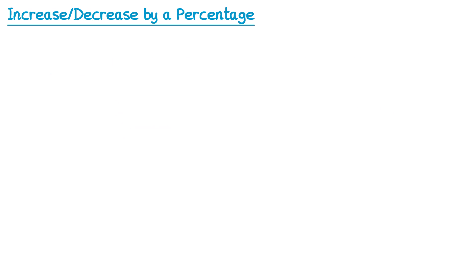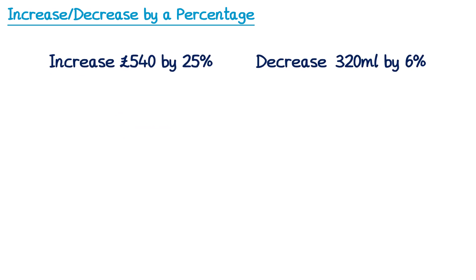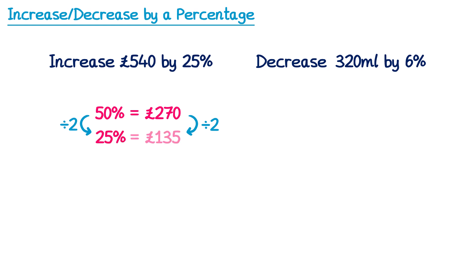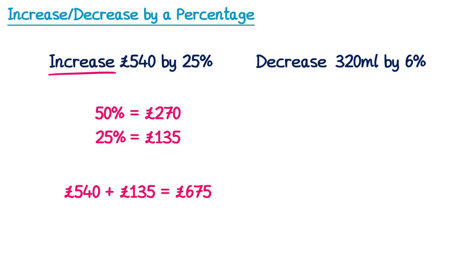Here are a couple of questions for you to try — pause the video and press play when you want to check the answers. For the first one, we need to find 25% of 540. I'll find 50% first: 540 divided by 2 is 270. Then 25% is 270 divided by 2, which is 135. Because the question says increase, I add this on: 540 + 135 = 675.